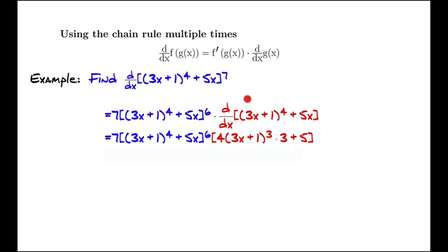So we had to use the chain rule again inside this d dx at the end of the first chain rule. We may have to do that multiple times, but this time we're done. We can simplify this slightly by multiplying the 4 and the 3 to get 12 to make the final answer.